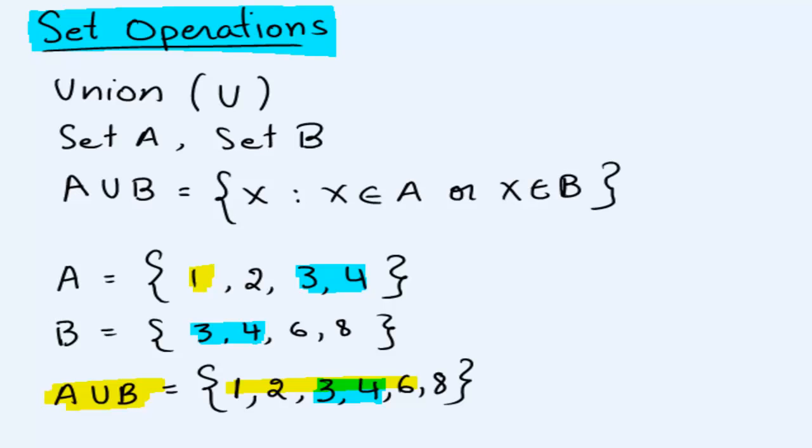For each element in our union we can ask, does 1 appear in our set A or B? If yes, it's going to appear in the union. Does 2 appear in either set A or set B? Well, it appears in A, so it's going to be in the union. Does 3 appear in either set A or B? If yes, it's going to appear in the union. And so on.